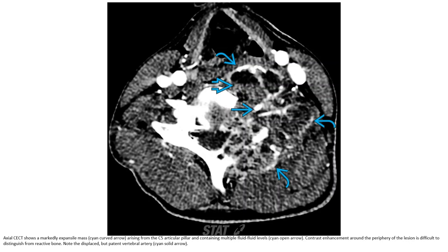On contrast CT, there is a remarkably expansile mass arising from the C-spine articular pillar and containing multiple fluid levels. Contrast enhancement is seen around the periphery of the lesion. It is difficult to distinguish from reactive bone changes. Note the displaced but paired vertebral artery.